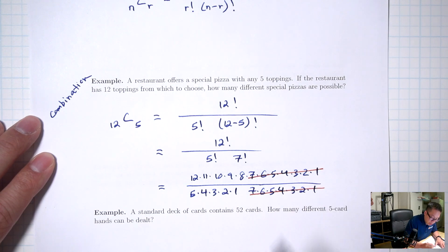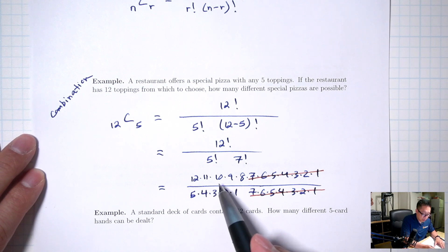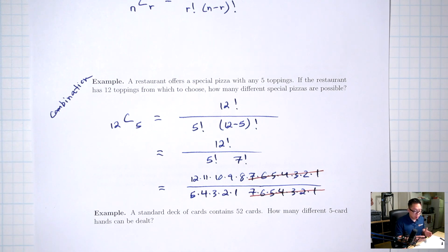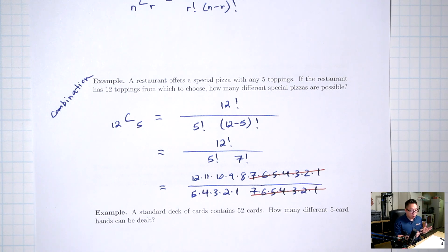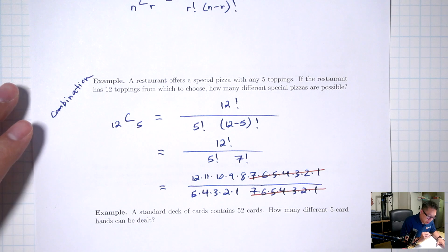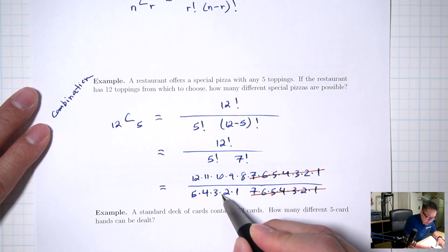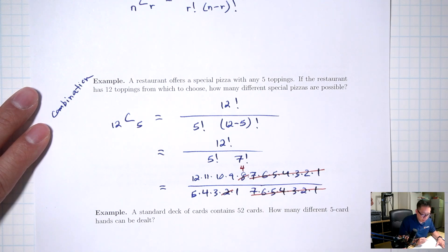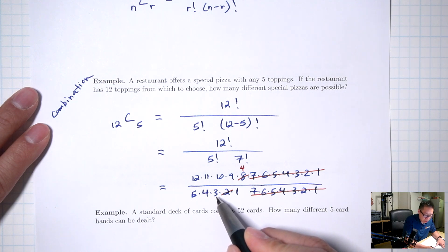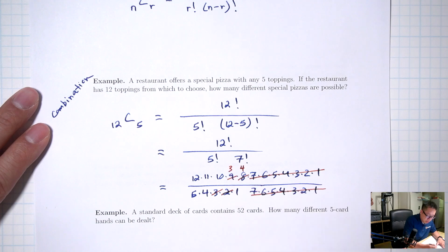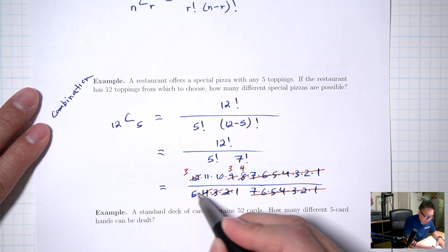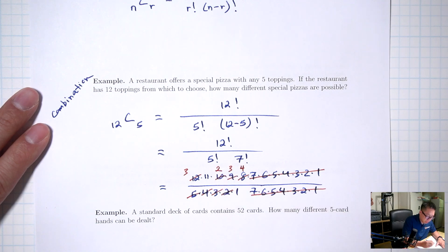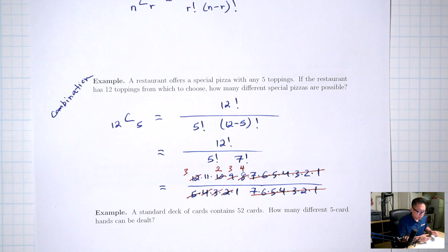Now let's talk about the formula. There is a formula for counting combinations: n choose r, where n is the total number of items and you're choosing r of them. The formula is n factorial over r factorial times (n minus r) factorial. That exclamation mark stands for factorial, which I'll explain in a moment.